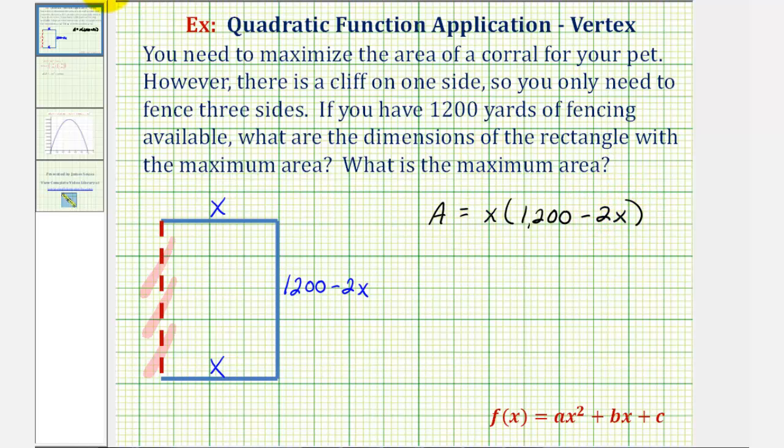Let's go ahead and distribute here. That would give us A equals 1,200x minus 2x squared. Notice how we have a quadratic function here, so let's write this as a function. We'll say A is a function of x, or A(x) equals— Now let's put the terms in descending order, so we have negative 2x squared plus 1,200x.